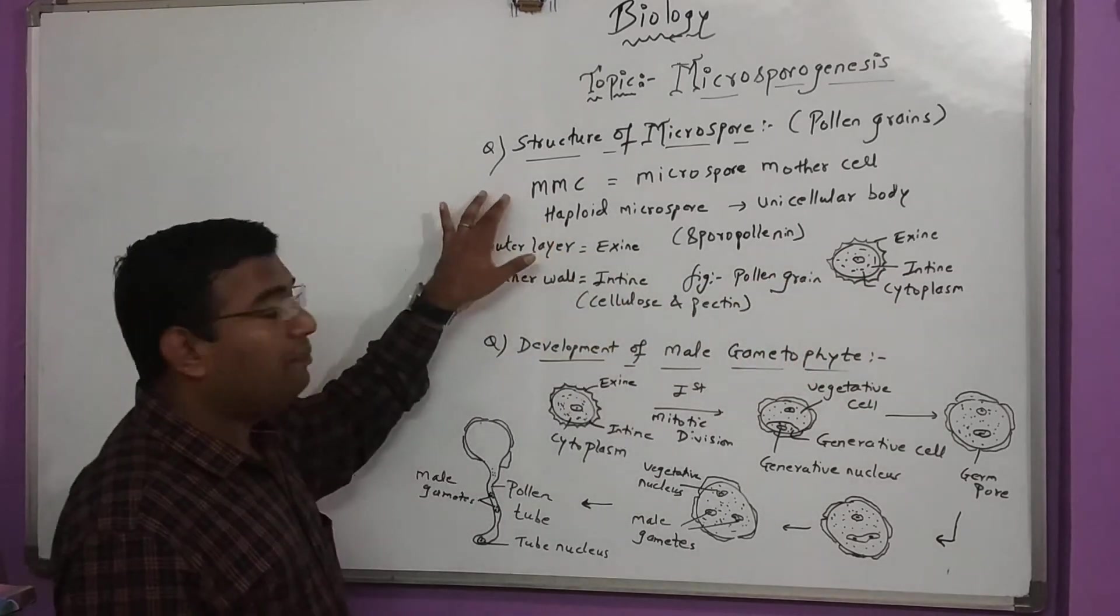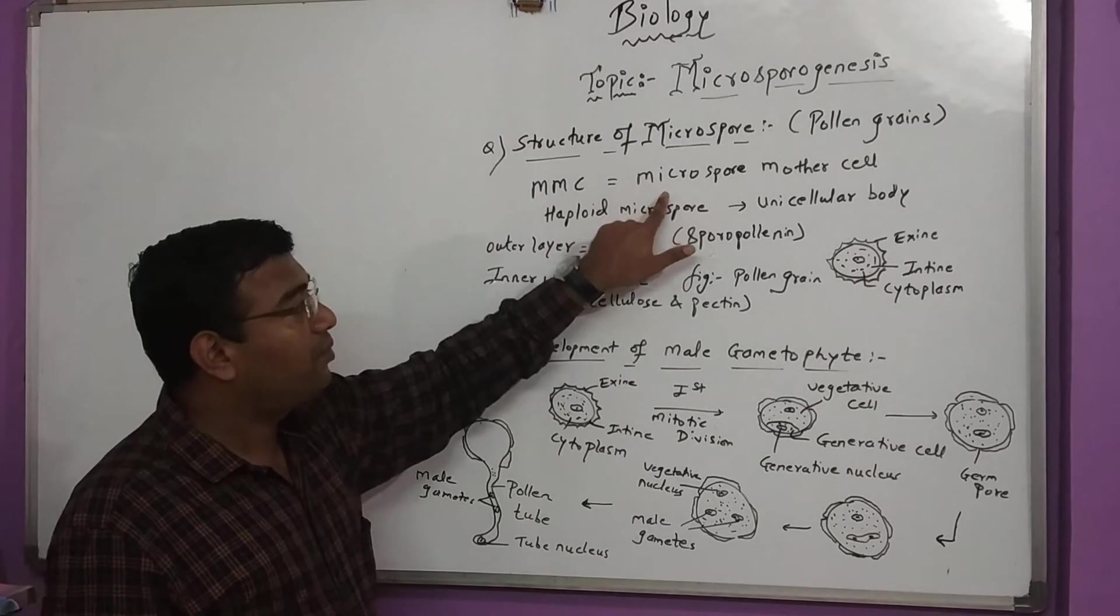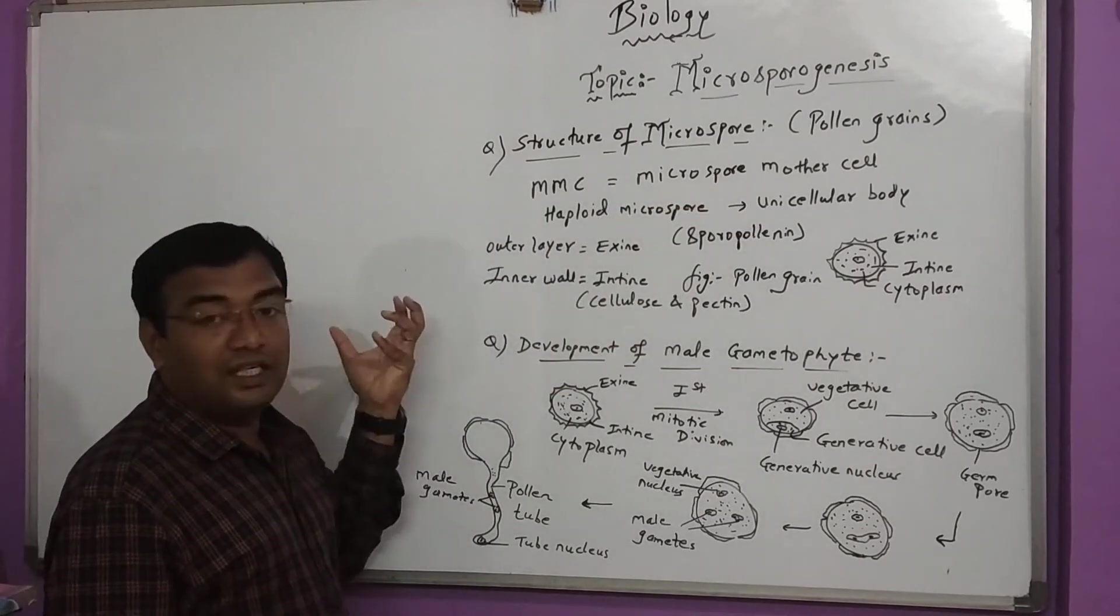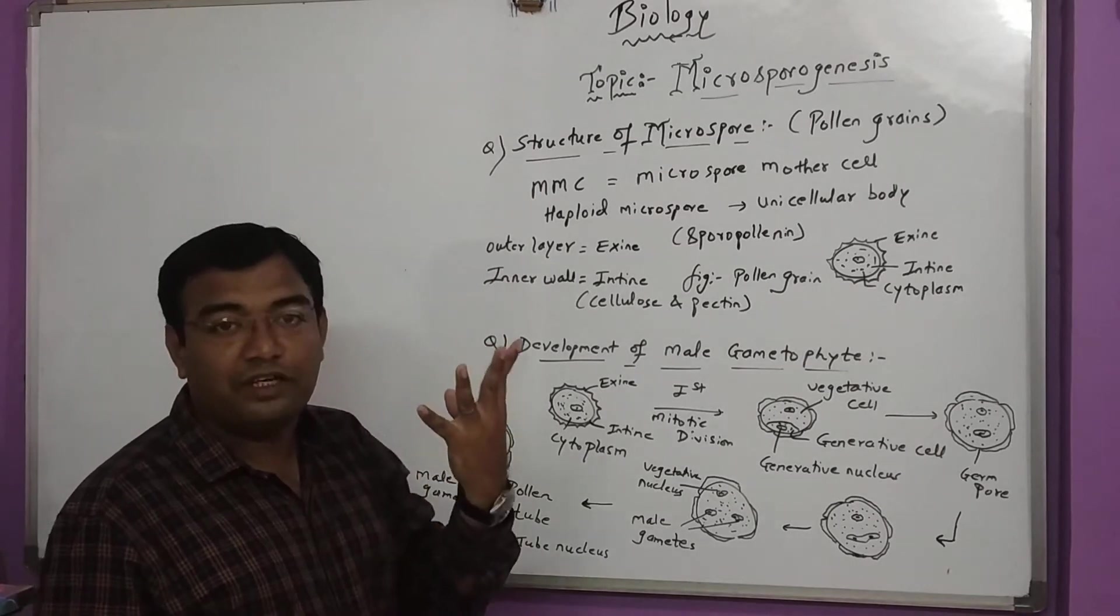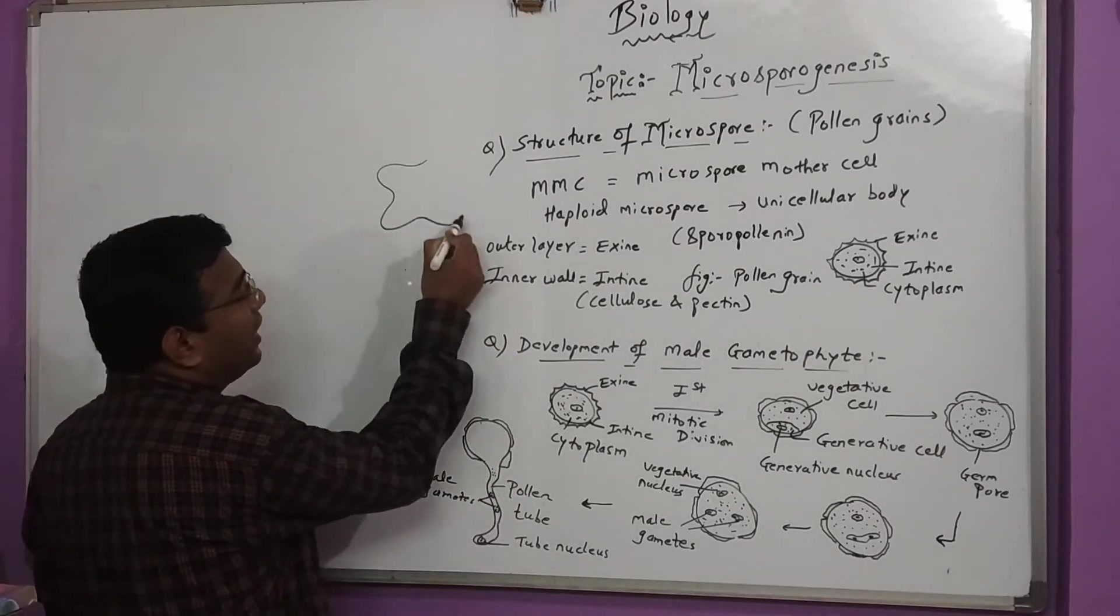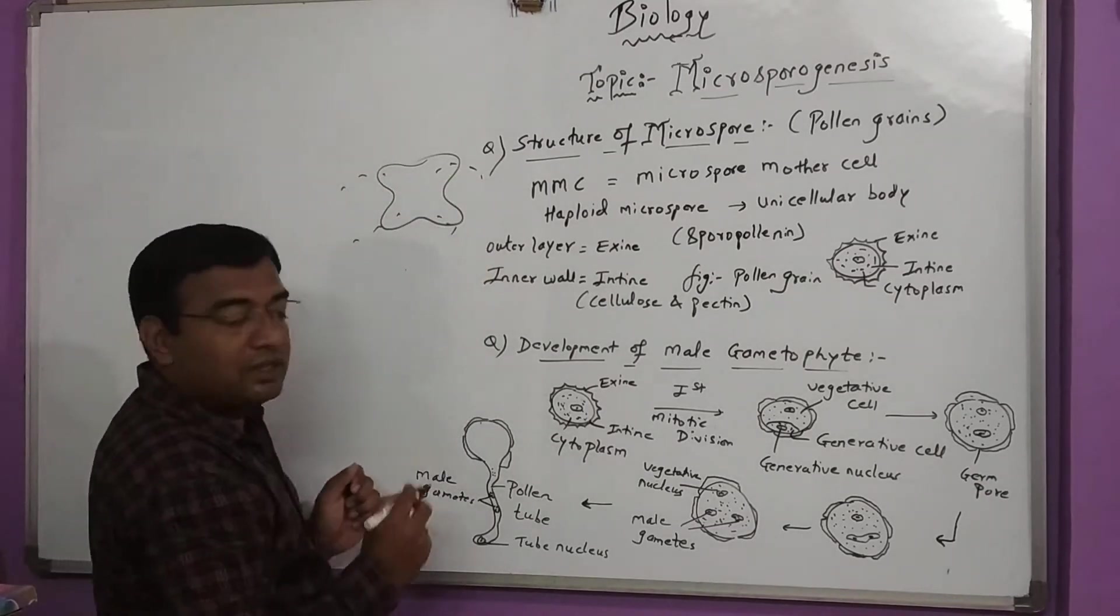It is developed from MMC. MMC means microspore mother cell. Microspore mother cell is a tetrad form. This structure gets dehisced, and after dehiscence, the spores are released outside.